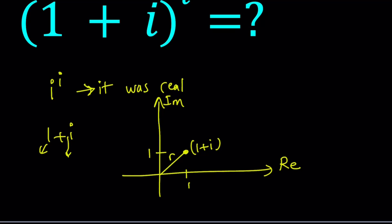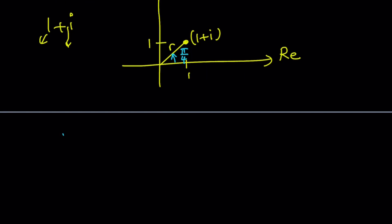This gives us two things: the radius or modulus r, and the angle the number makes with the positive x-axis. In this case, our angle or argument is going to be pi over 4 because we have the diagonal. So r is the hypotenuse of a 1-1-√2 right triangle, giving us r equals square root of 2. And the angle theta is pi over 4.